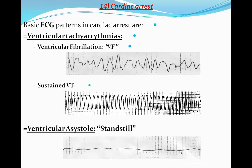True asystole on the ECG should appear as a wavy, slightly irregular line — not a perfectly straight line like what is depicted in movies and TV shows. If you see a very straight line on the monitor in the CCU, you should check the patient clinically first, as taught in ACLS: check consciousness, and also check whether the electrodes have become detached from the chest. True asystole appears as a slightly wavy line.